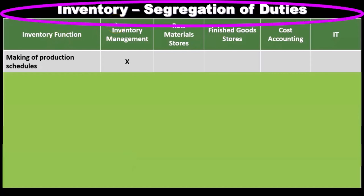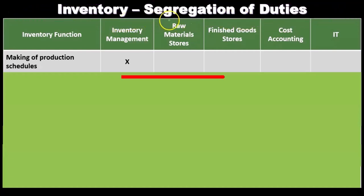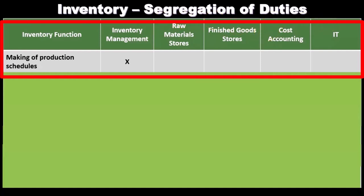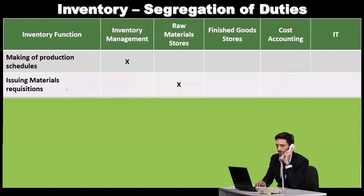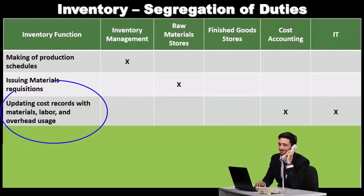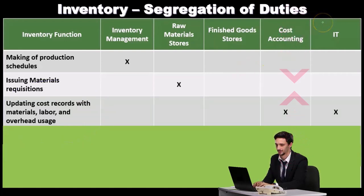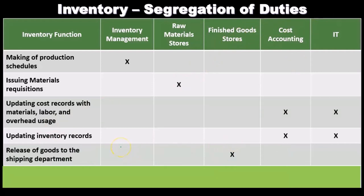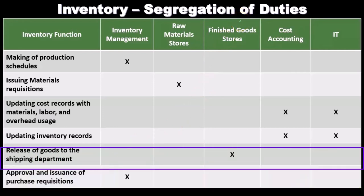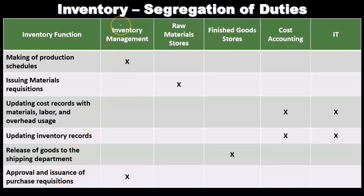We can now present these segregation of duties in a table format. The functions are listed alongside the areas involved — inventory management, raw materials stores, finished goods storage, cost accounting, and IT. For example: making production schedules falls under inventory management; issuing materials requisitions is in raw materials stores; updating cost records with materials, labor, and overhead usage is in cost accounting; releasing goods to the shipping department is in finished goods stores; and approving and issuing purchase requisitions is in inventory management.